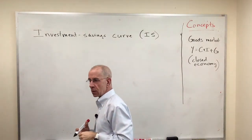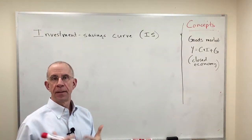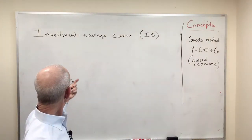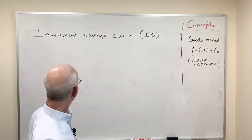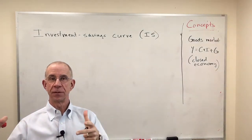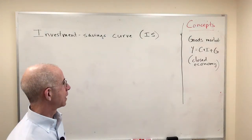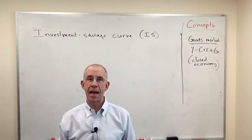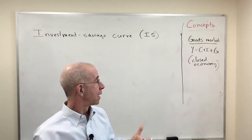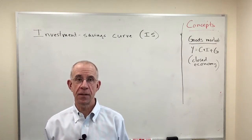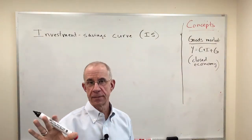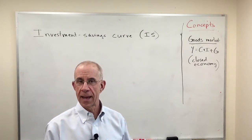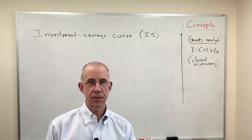I'm going to build up one of the workhorse concepts in intermediate macroeconomics, which is the IS curve — short for the investment-savings curve, where savings equal investment. The underlying concept is looking at a goods market equilibrium. The version I'm talking about here is a closed economy version where we don't have to worry about exports and imports of goods and services.